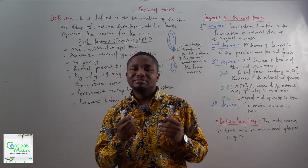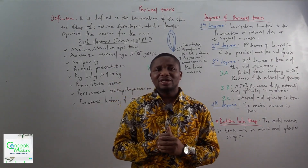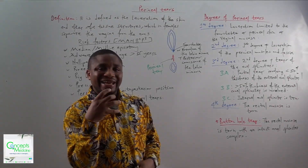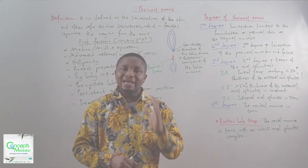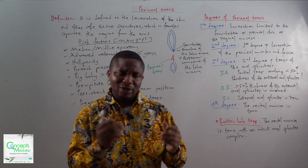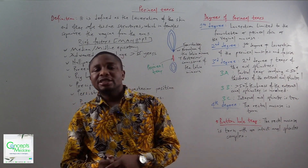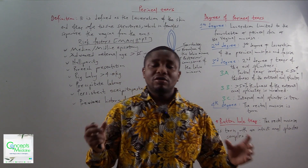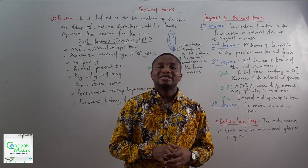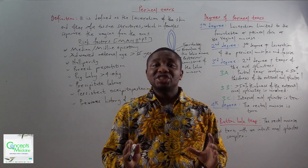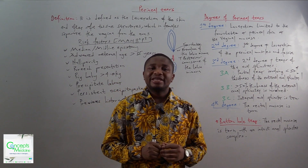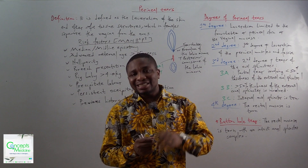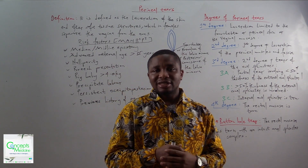The next topic is the degrees of perineal tears. The degrees depend on the depth to which the laceration has occurred. There are four degrees. The first degree is when the laceration is limited to either the fourchette, the perineal skin, or the vaginal mucosa. The second degree is equivalent to the first degree plus laceration of the perineal muscles and the fascia.